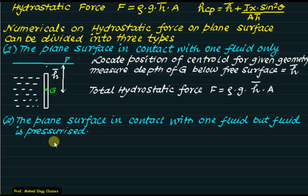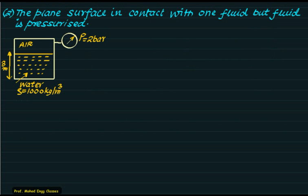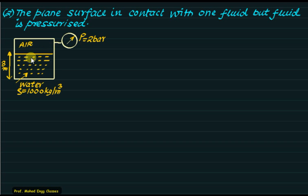In the second category, the plane surface is in contact with a pressurized fluid — an external agency acts on the fluid to pressurize it. Here we have a closed vessel with air at 2 bar pressure above water of density 1000 kg/m³, with a water column height of 3 meters. Since the tank is not open, the pressure at the surface is not atmospheric but equals 2 bar acting on the water.